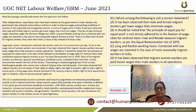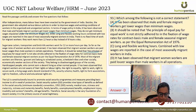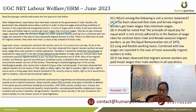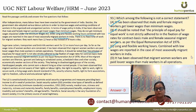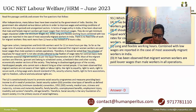Which among the following is not a correct statement? The passage confirms that male and female migrant workers get lower wages than minimum wages, that the principle of equal pay for equal work is not strictly adhered to, and that long and flexible working hours with low wages are reported for most seasonally migrant workers in India. However, the statement that migrant women workers are paid lower wages than male workers in all operations is not mentioned or supported in the passage. So that is the incorrect statement.